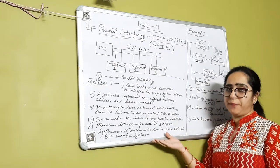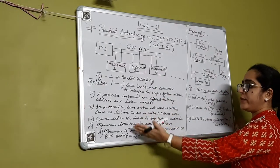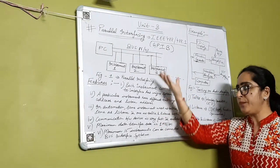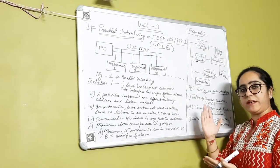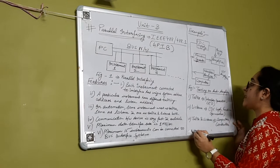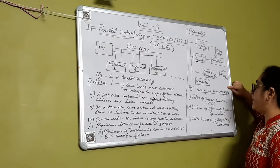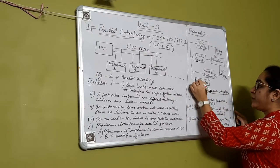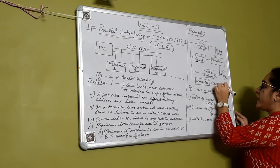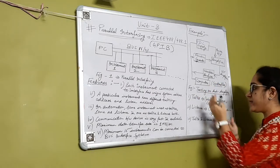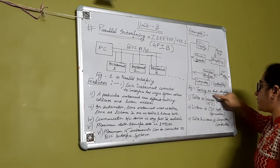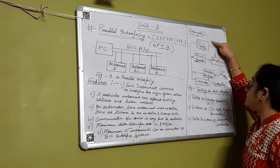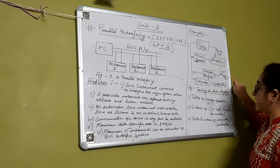I would like to explain this with the help of an example — testing an audio amplifier. Here, the computer acts as the controller because it is controlling the whole process. The devices connected are: a waveform analyzer, function generator, DC supply, and amplifier. All these devices are connected, and now let's see how the operation is done.